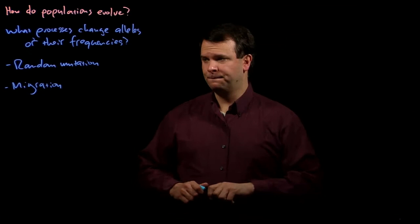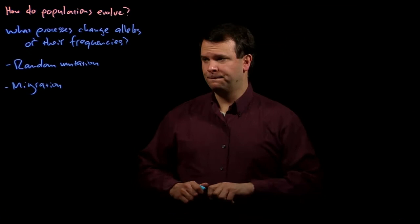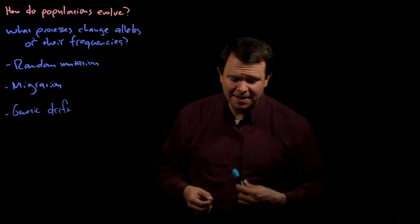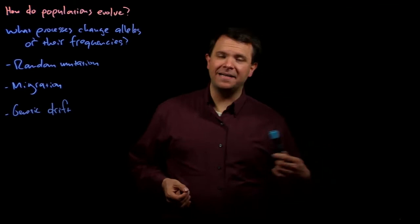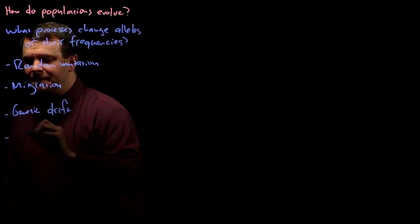The third is random genetic drift. In completely randomly mating populations, that very randomness can lead to spontaneous changes in allele frequency. And of course, there's the big fish in the pool, which is natural selection.